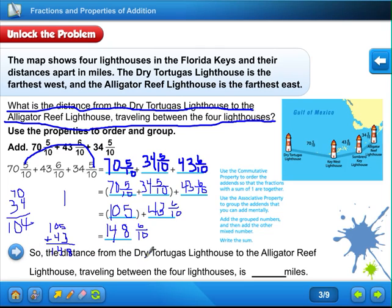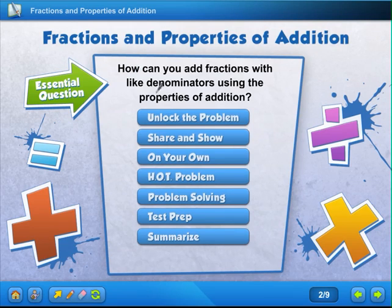So the distance from the Dry Tortugas Lighthouse to the Alligator Reef Lighthouse, traveling between the four lighthouses, is 148 and 6 tenths miles. So we used different properties to put them together. We used the commutative property and the associative property, and that helped us to figure out our answer. That was how you can add fractions with like denominators using properties of addition. If you have any questions about that, let me know in class. Bye everyone!